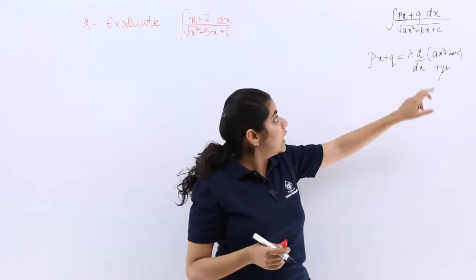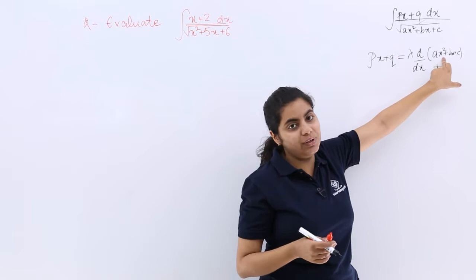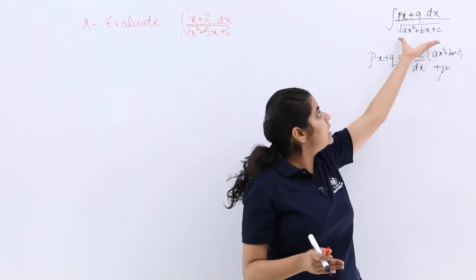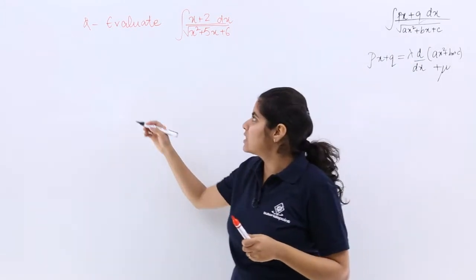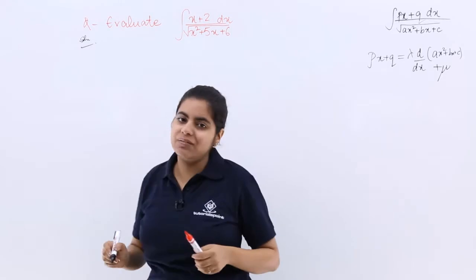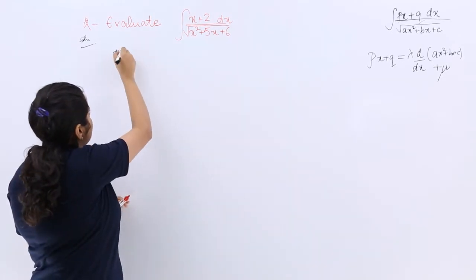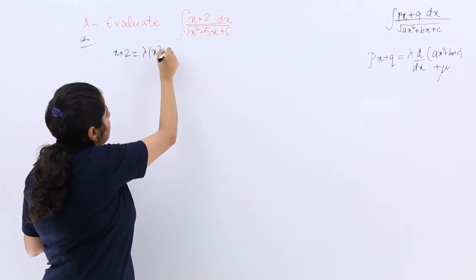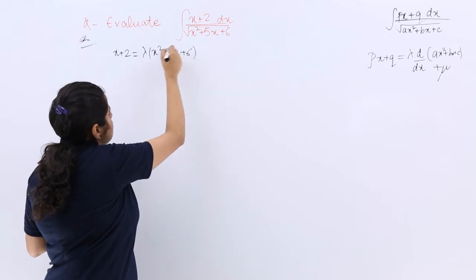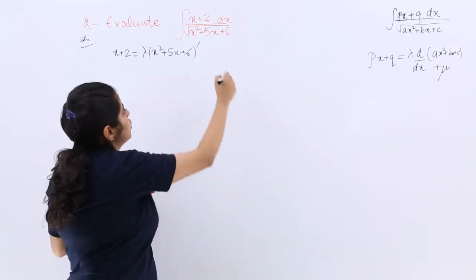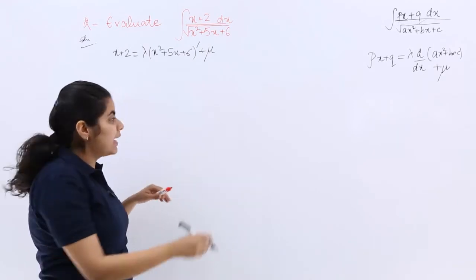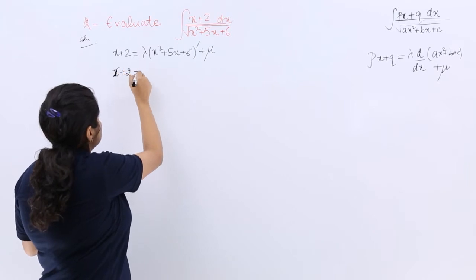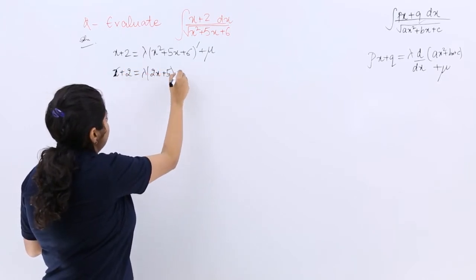One important note: if the denominator is under a root, you do not put the root in the differentiation — only write what is inside the root. Now let's start the solution. We resolve the given numerator: x + 2 = lambda times the differentiation of the denominator, plus mu.